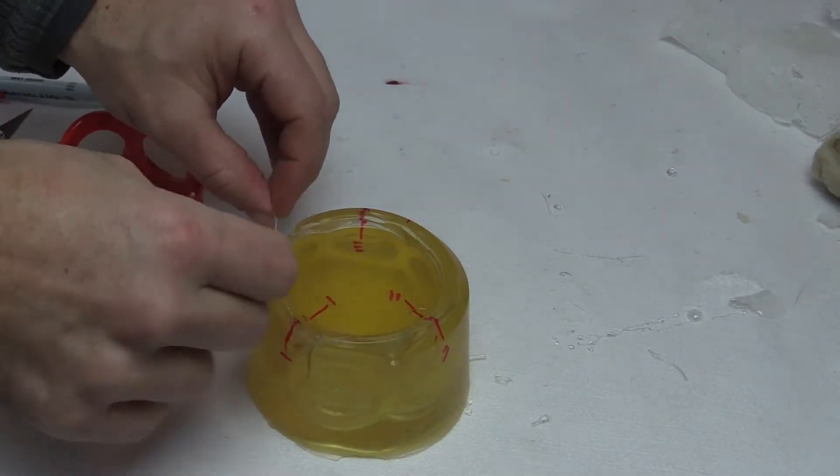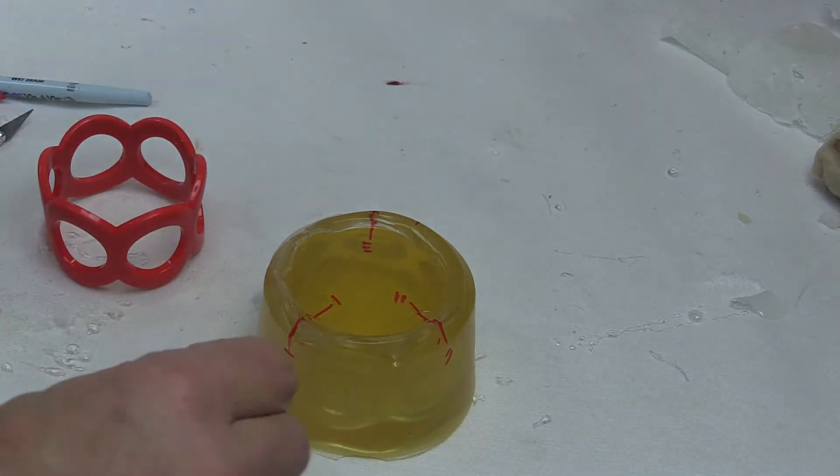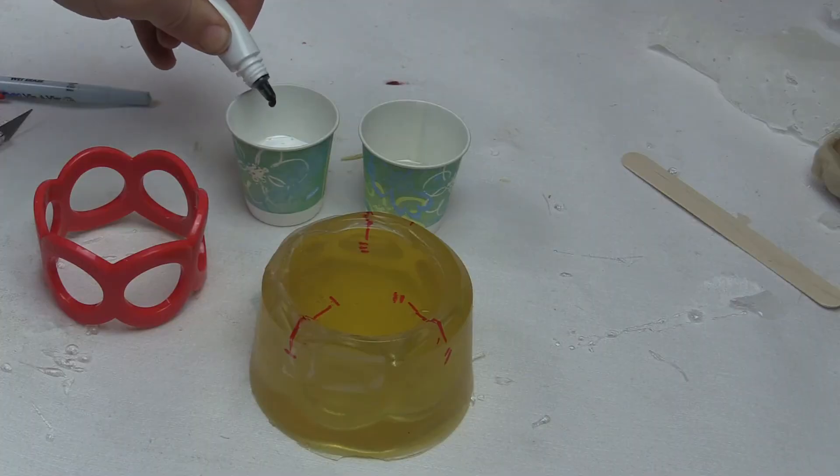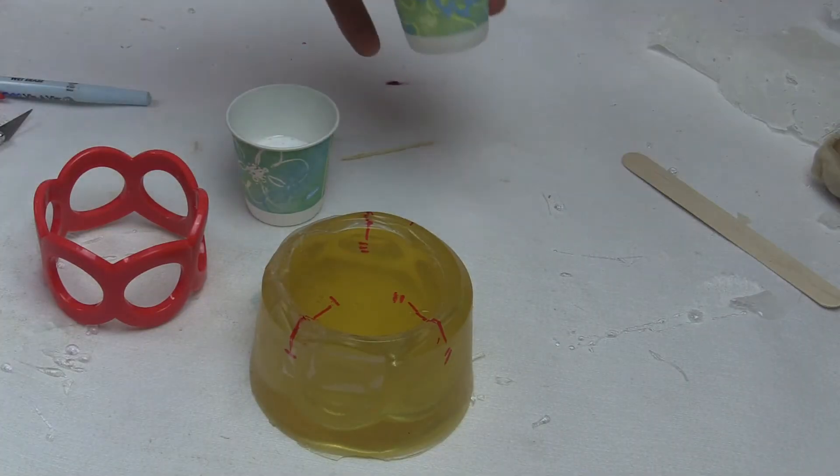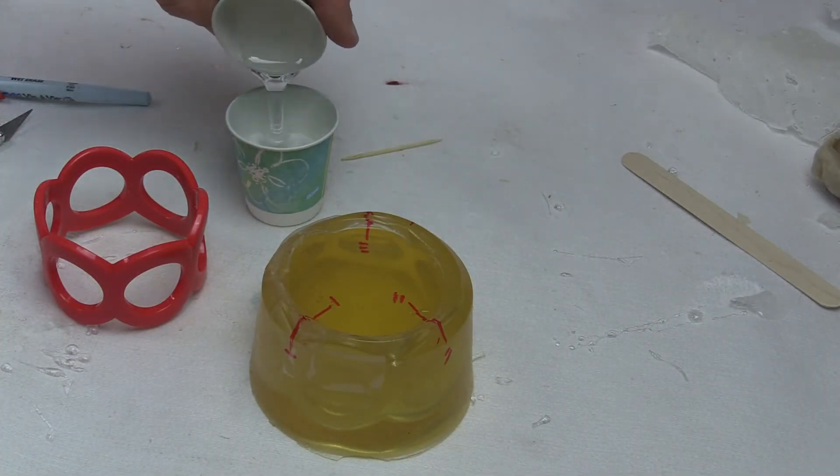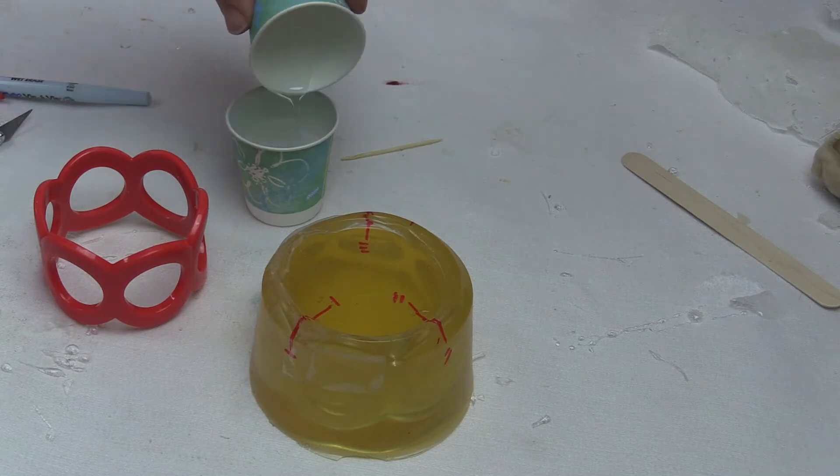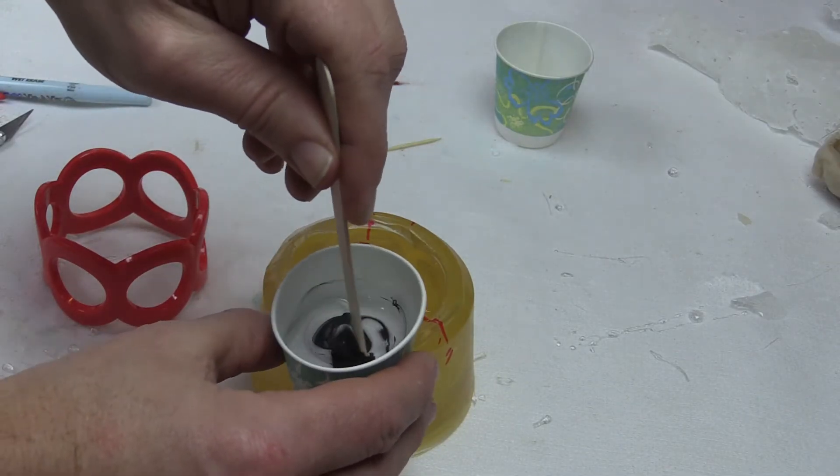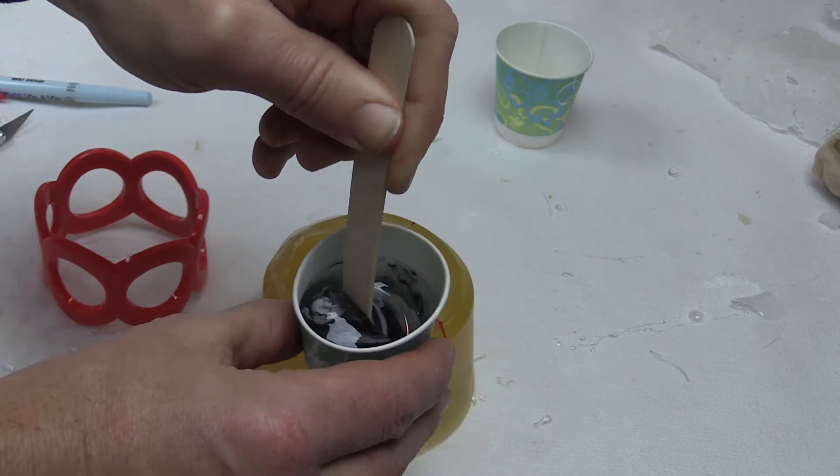Tape up the sides with masking tape to keep the mold together. We're using Composite Cast white resin with a little black color to make a gray bracelet. Mix in a few drops of color into the Composite Cast, then mix the two parts of resin together, 50% of each.